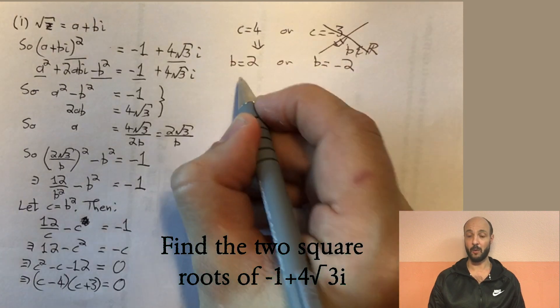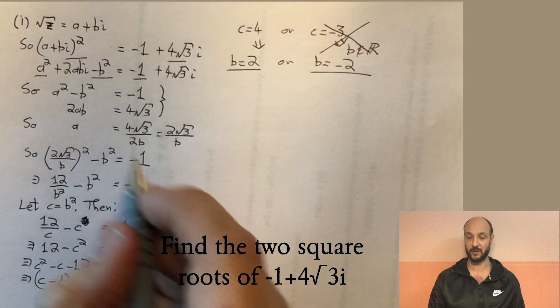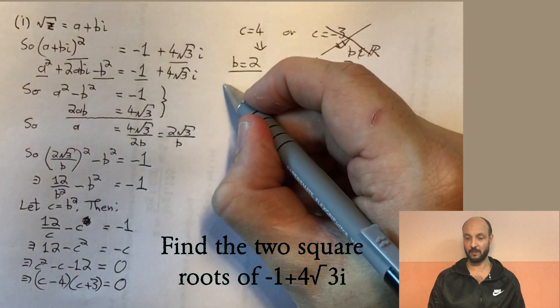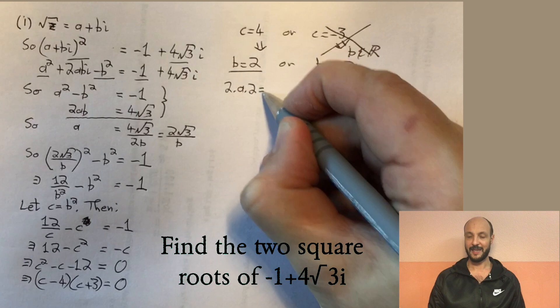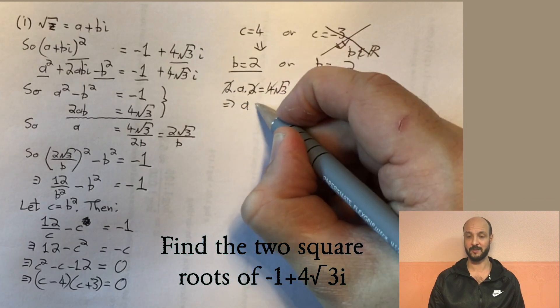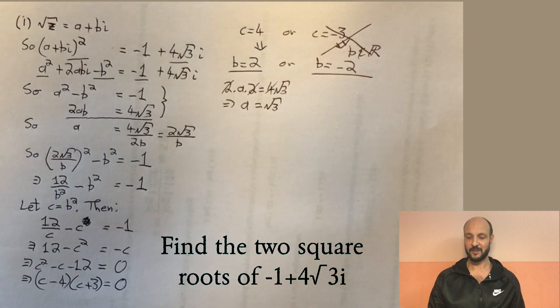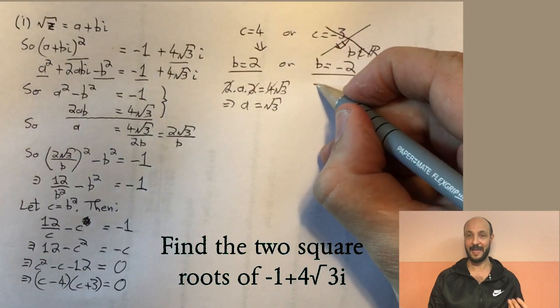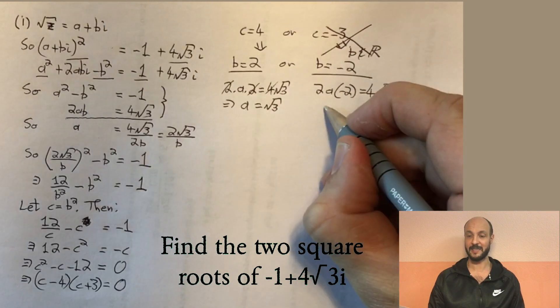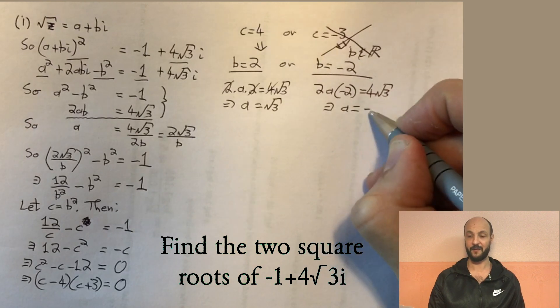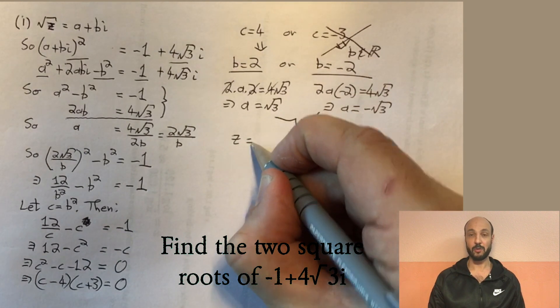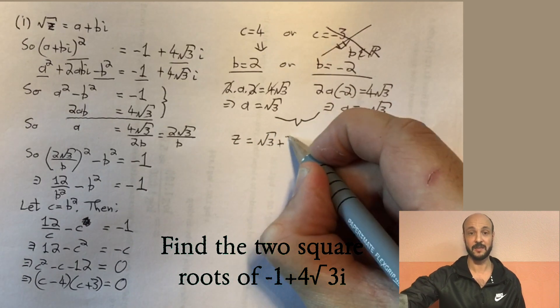So we've got two possible answers for b, two and minus two. And we need to go all the way back up to our initial pair of equations and find the simplest ones to substitute b in to find what a is equal to. So let's use the second one. If we put the positive two into our second equation, we get two times a times two equals four root three, which if we cancel fours on both sides gives us a equals root three. So we've got this one pair of numbers, a equals root three and b equals two. If we try it with b equals minus two, the same equation, we get two times a times minus two equals four root three. So minus four a equals four root three. So a equals minus root three. So we have two possible answers, root three plus two i or minus root three minus two i.